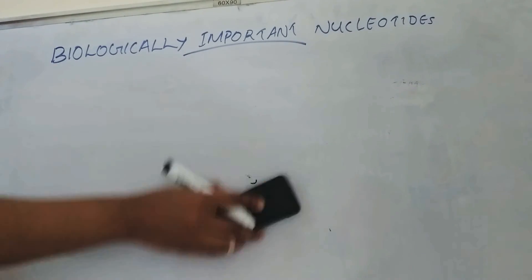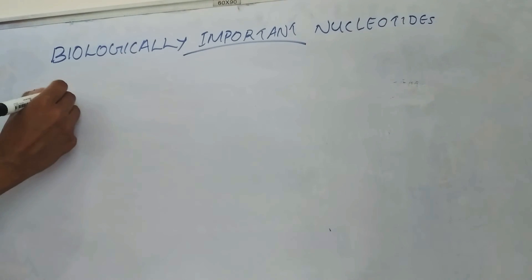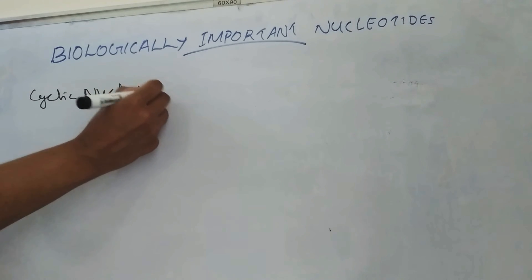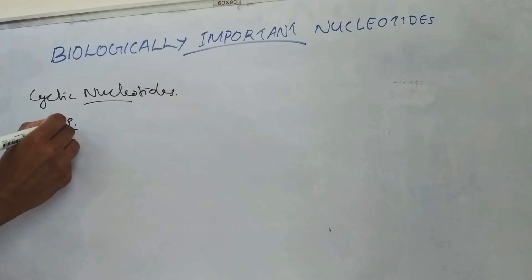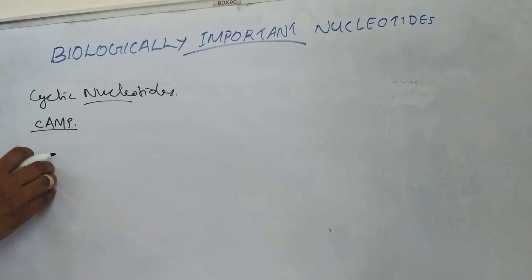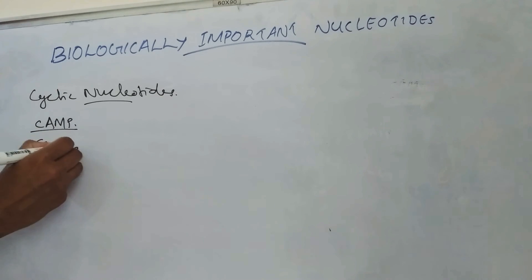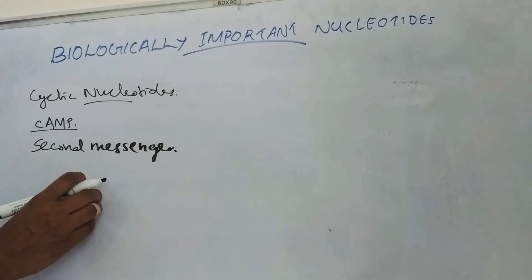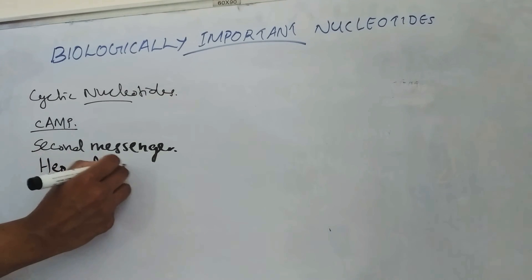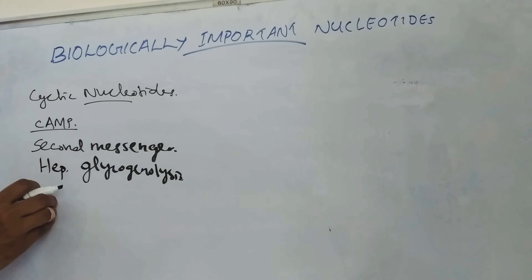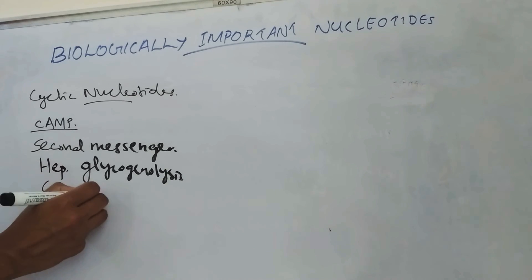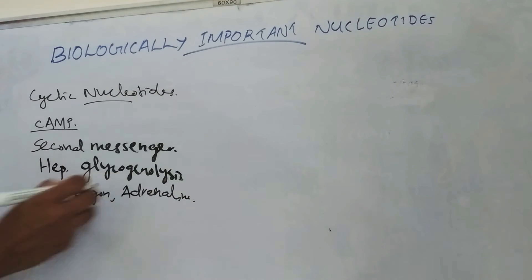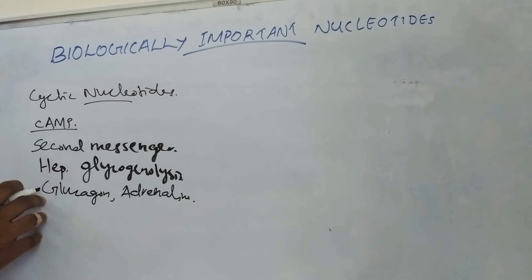Cyclic AMP and cyclic GMP are cyclic nucleotides. Cyclic AMP is known as a second messenger in many biological processes. It is a mediator in hepatic glycogenolysis and mediates the effect of a variety of hormones like glucagon and adrenaline. It acts as a second messenger in the cell.